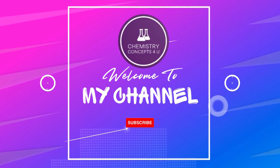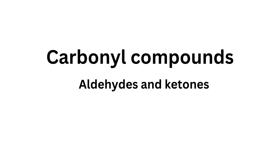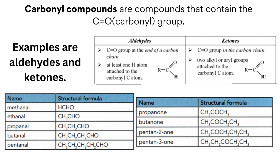Welcome back to my channel. Today I would like to talk about the concept of carbonyl compounds, which are mainly aldehydes and ketones. Carbonyl compounds contain the C=O (carbonyl) group. The difference between aldehydes and ketones is that the C=O group is at the end of a carbon chain for aldehydes, whereas it is within the carbon chain for ketones. For aldehydes, at least one hydrogen atom is attached to the carbonyl carbon; for ketones, two alkyl or aryl groups are attached.